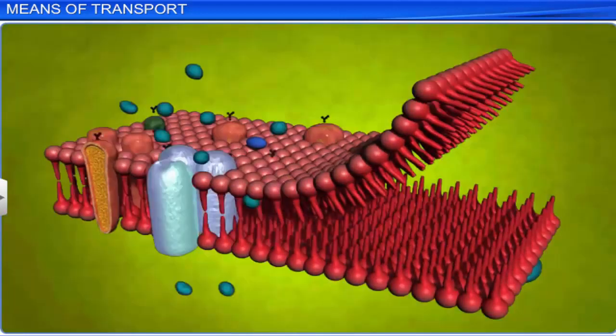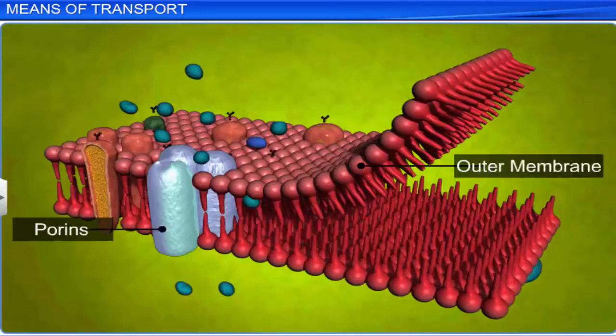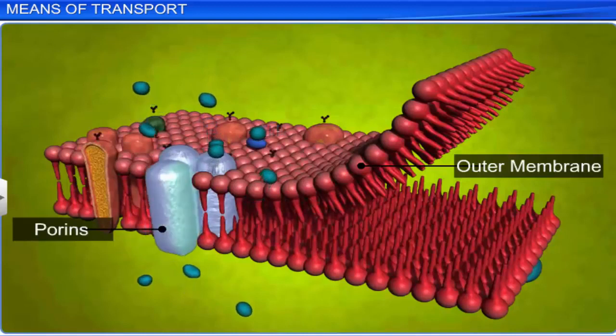Some transport proteins, called porins, form pores in the outer membranes of cell organelles such as plastids or mitochondria, to allow molecules of the size of small proteins to pass through. When a molecule binds itself to a porin, it rotates to release the molecules inside the cell.